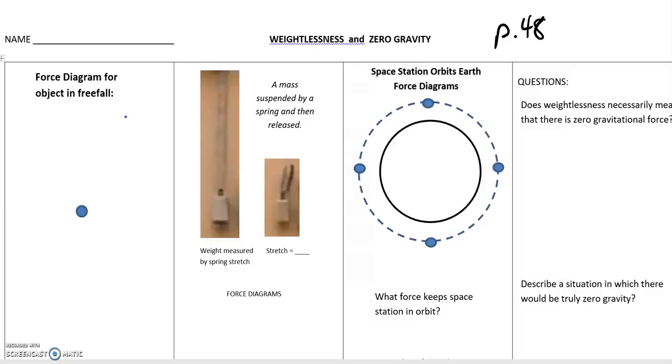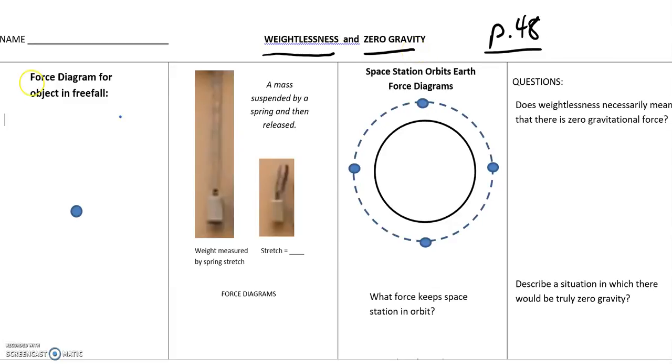This is a little bit of instruction so you can complete page 48 of your packet about weightlessness and zero gravity. You should be able to make a force diagram for an object in free fall. If that's the object, please do that. Refer to your notes if you don't know how.